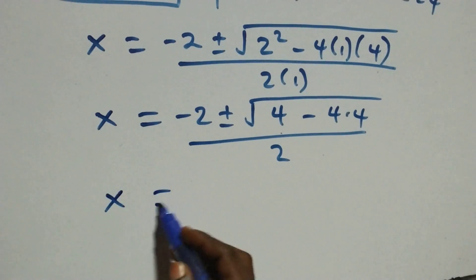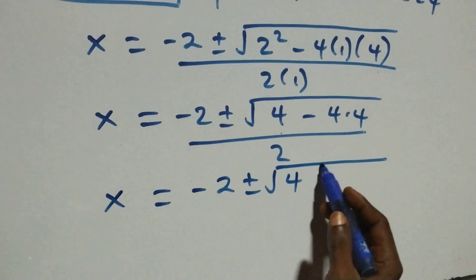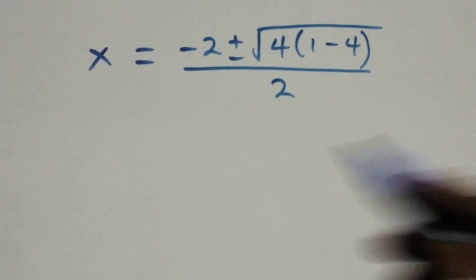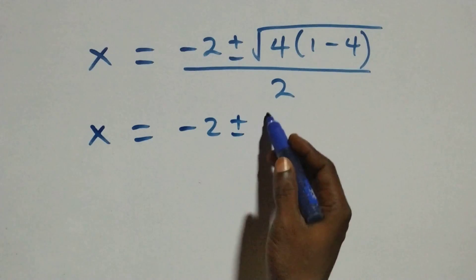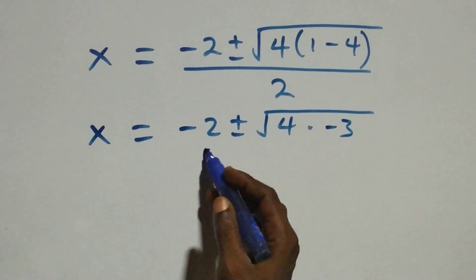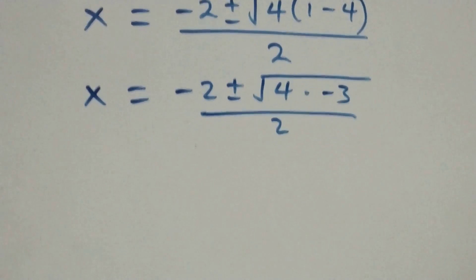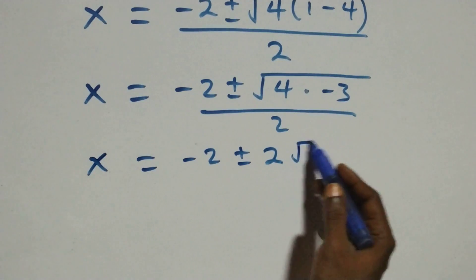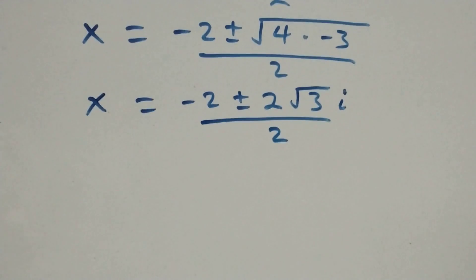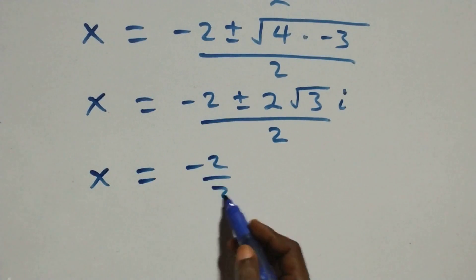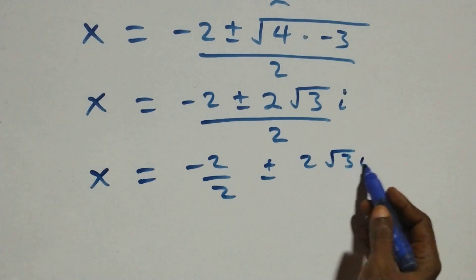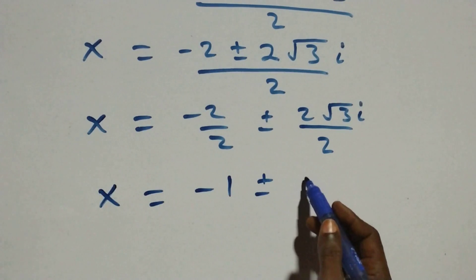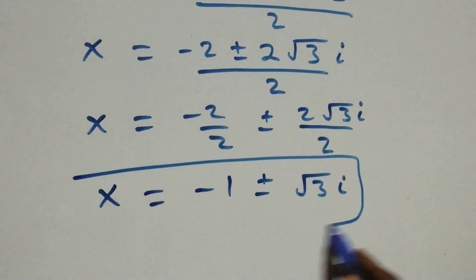This becomes x = (-2 ± √(4·(1 - 4))) / 2 = (-2 ± √(4·(-3))) / 2. Separating out √4 = 2 gives x = (-2 ± 2√3·i) / 2 = -1 ± √3·i. These are two more complex solutions.